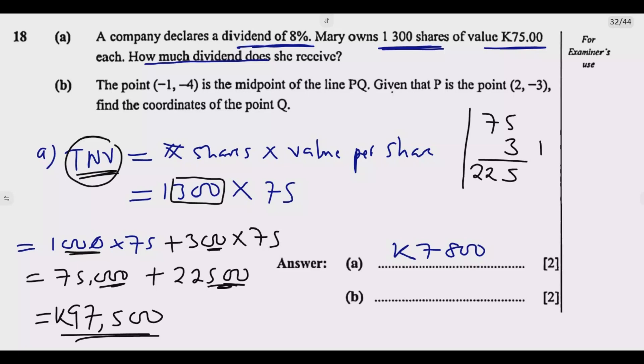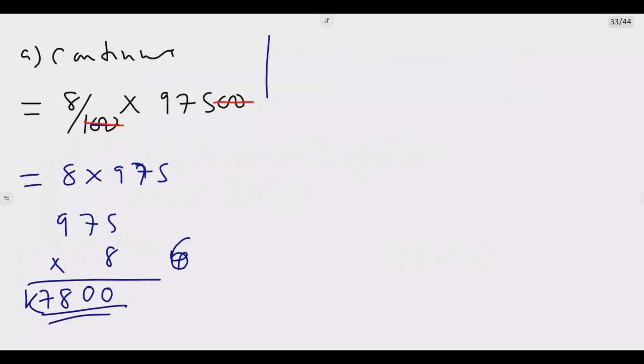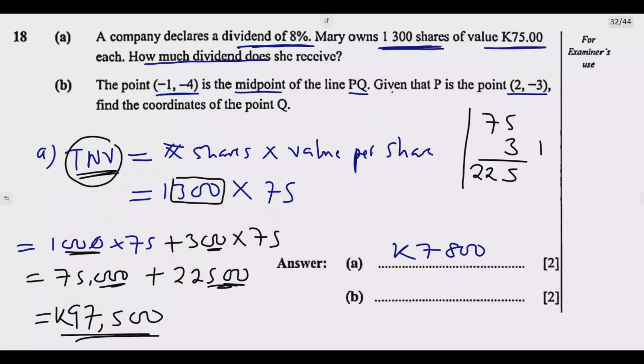Now we go to B. We are given this point is a midpoint of PQ. Then we are told P is this point. The question is to find Q. That's what the question is asking us to do. I can draw these lines coming from 2, negative 3.